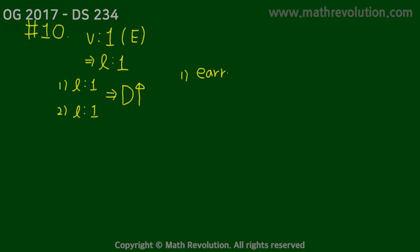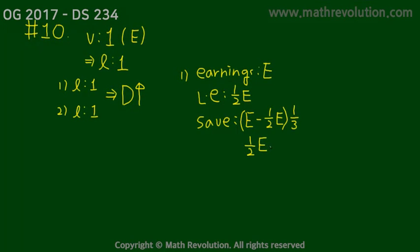Here, we have Earning, represented by E, and half of Earning is supposed to be on Living Expenses, so LE, Living Expenses, is supposed to be half of E. And then, one-third of the remainder is supposed to go into Saving. So, Saving is equal to the remainder, which is represented by E minus half of the E. And then, we take a third of this. So, this is the saving. Okay, but E minus half of E is just half of E, so it's half of E times one-third, which gives us one-sixth of E, meaning 600 is one-sixth of E. And E is 3,600. So, condition 1 is sufficient by itself.